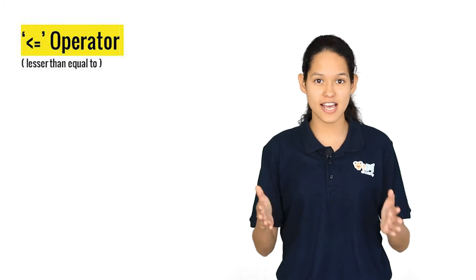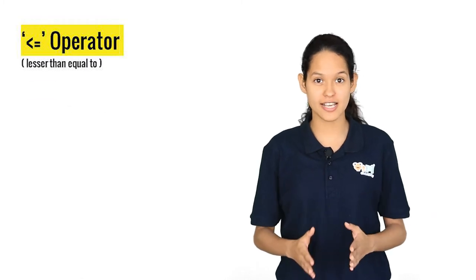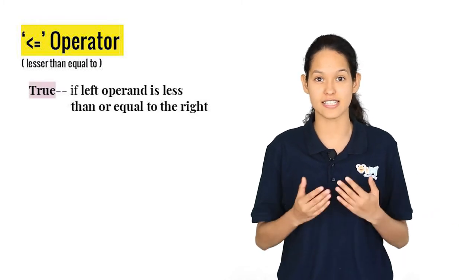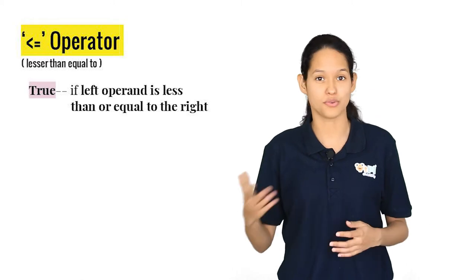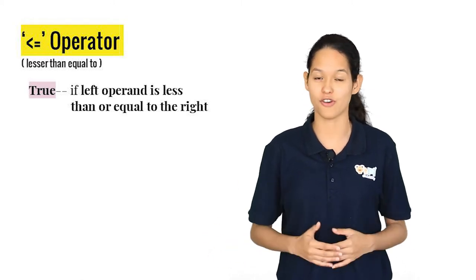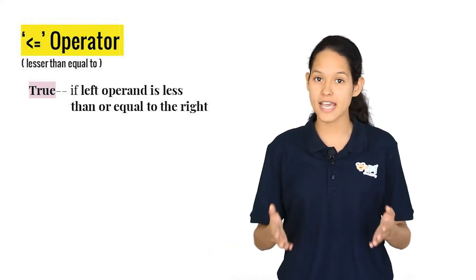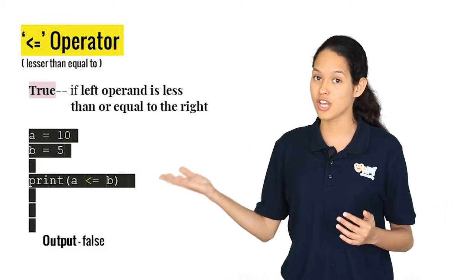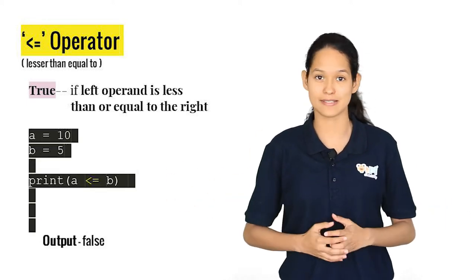Next we have the less than equal to operator. It checks if the left hand side operand is less than or equal to the right hand side operand and returns the value true or false based on the condition. You can try this code, change it, and notice the difference.